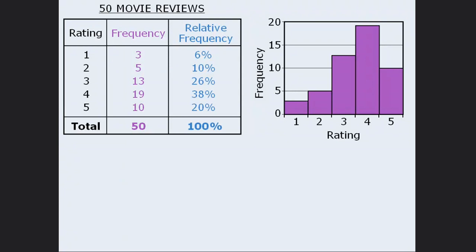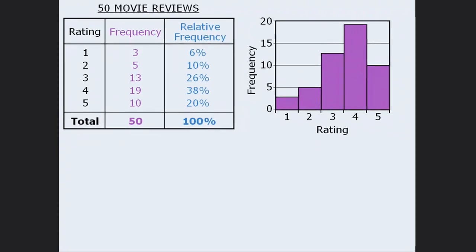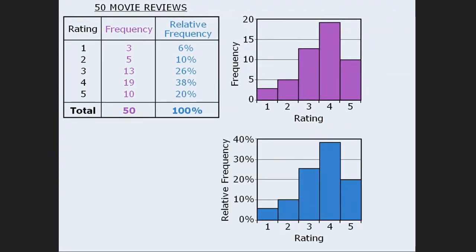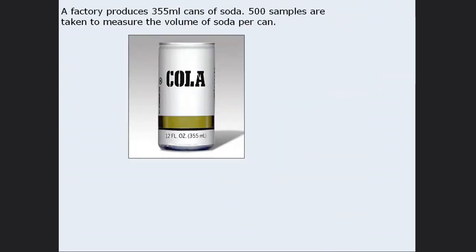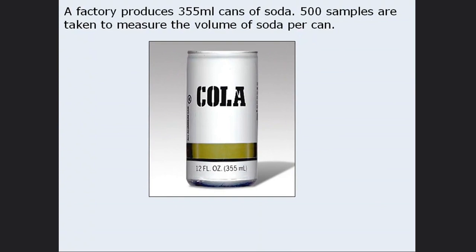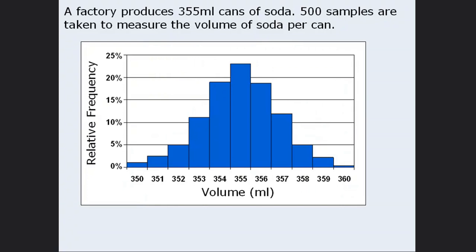The frequencies and the relative frequencies are very closely related. In fact, if we examine the histogram for the relative frequencies, we see that it's identical to the histogram for the frequencies. Now let's take a look at another distribution. Let's say we work at a factory that produces cans of soda. Although the machines are built to pour 355 milliliters of soda per can, they're not always perfect. As part of quality control, 500 cans are randomly selected and the volume of soda is measured.